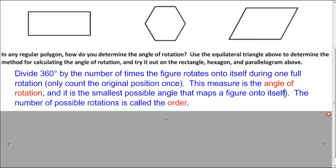And you want to pick the smallest one that maps it onto itself. So the other ones are angles that will map it onto itself, but the angle of rotation specifically is the smallest one of those. And the number that we're dividing by, that's called the order. So the number of times you can map it onto itself is the order of rotational symmetry.